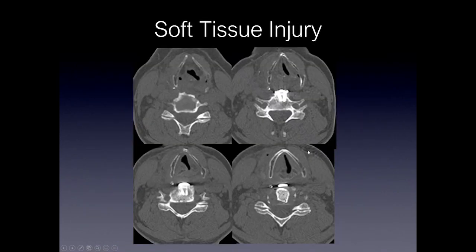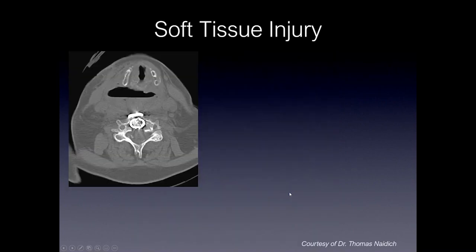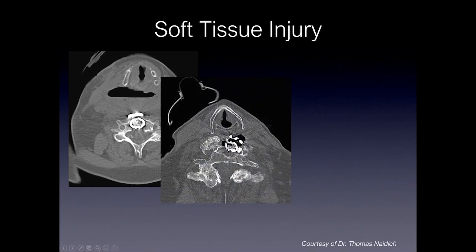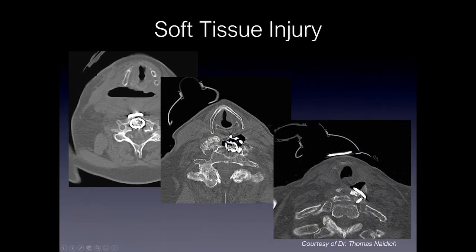Finally, soft tissue injury can occur. In this ACDF performed in the cervical spine, there was a breakdown in the construct. You can see a large collection along the esophagus, and the construct actually migrated into the esophagus, resulting in erosion of the posterior wall of the esophagus.